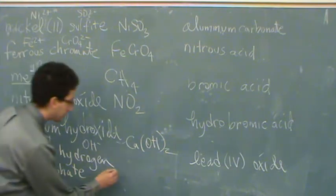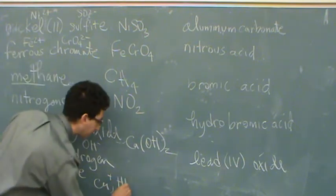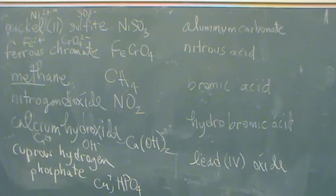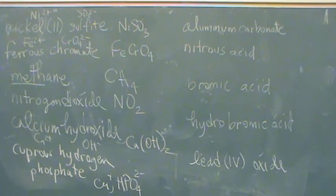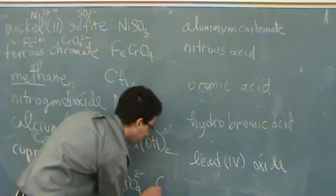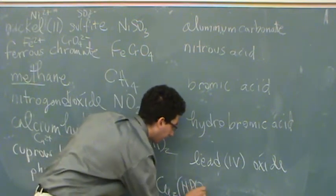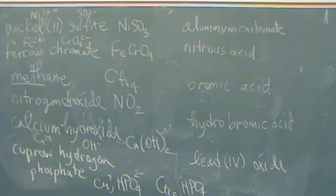So cuprous is Cu +1, hydrogen phosphate, HPO4. What charge? Two minus. Two minus. Because phosphate is 3-, you add a hydrogen on there, it'll bump it down to 2-. So this is Cu2HPO4.